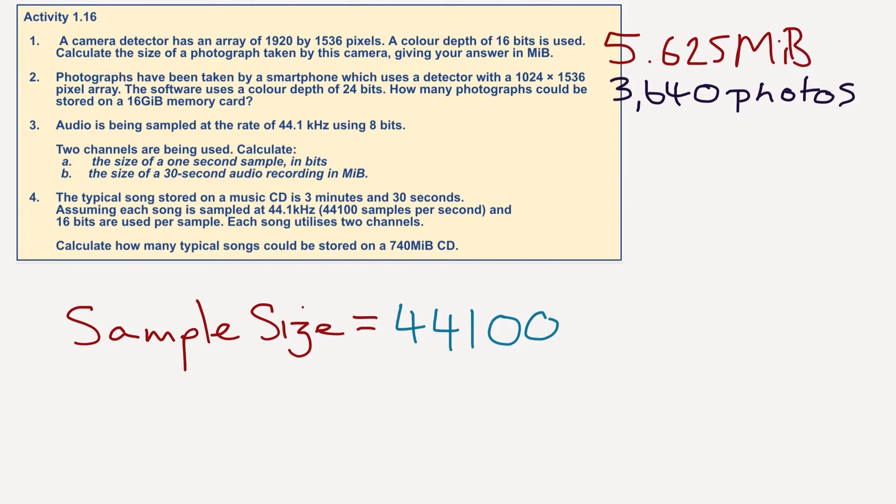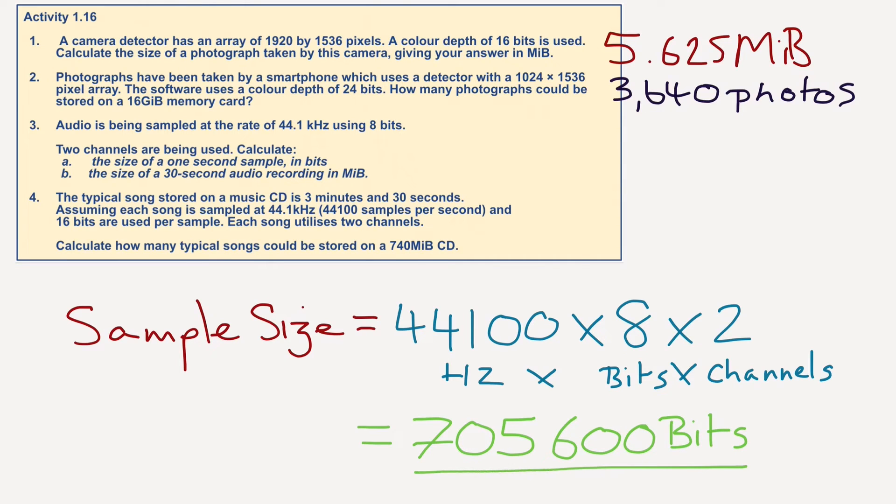And then I'm going to times that by 8. So this is hertz times bits. And then we're going to times that by 2 because that's the number of channels. So it's hertz times bits times channels, which equals 705,600 bits. That is the answer to A.